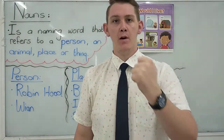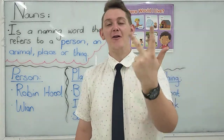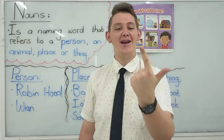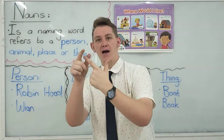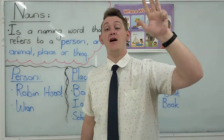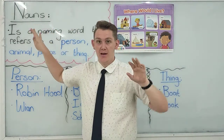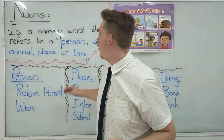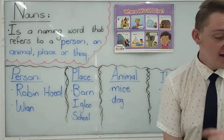Say it with me: person, animal, place, thing. Those four categories we call nouns. It is a naming word for those four: person, animal, place, and thing.